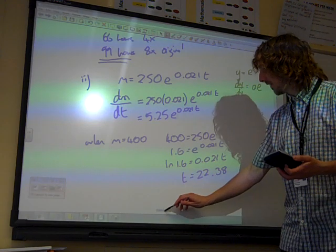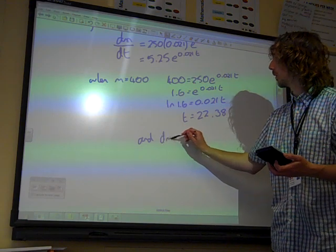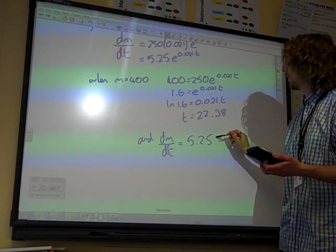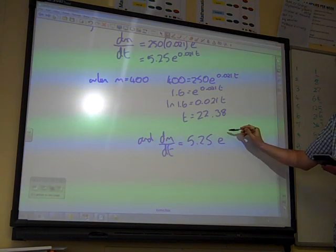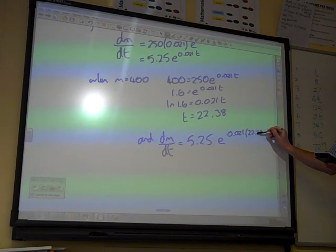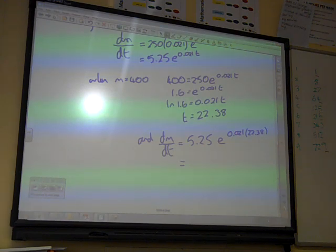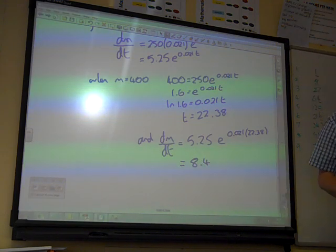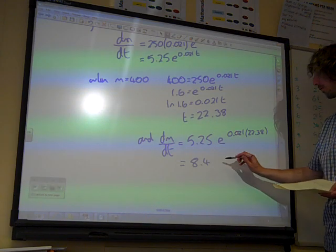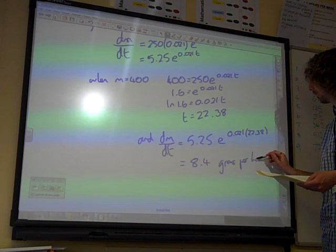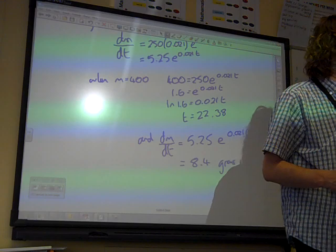We're going to put that into our dm by dt equation. 5.25e to the 0.021 times 22.38. That gives us 5.25e to the 0.021t. So that's grams per hour. And that is another six marks in the bag.